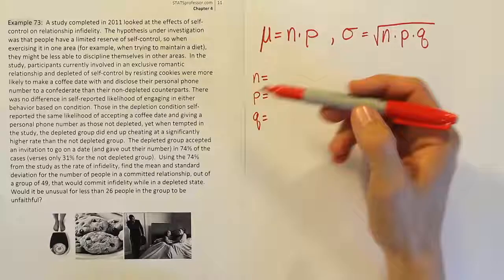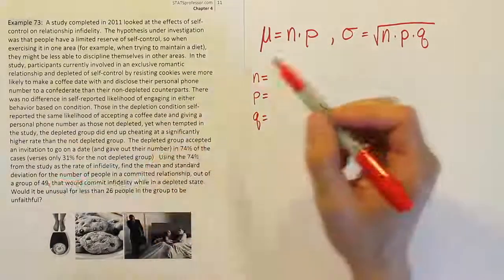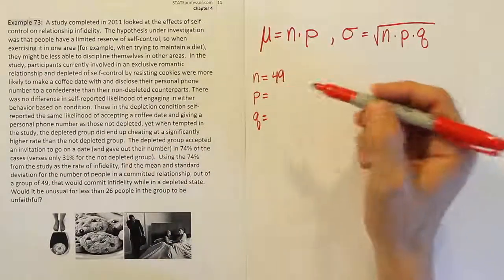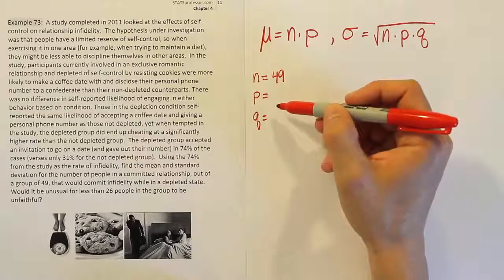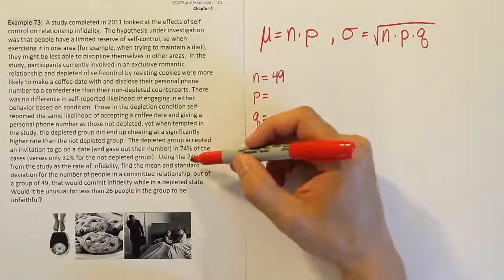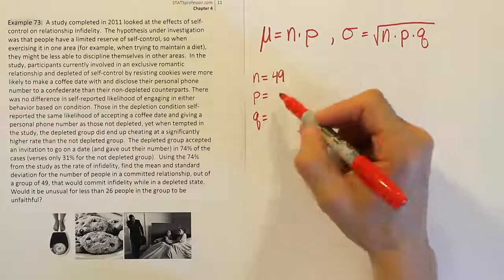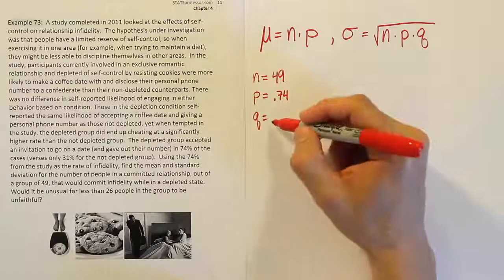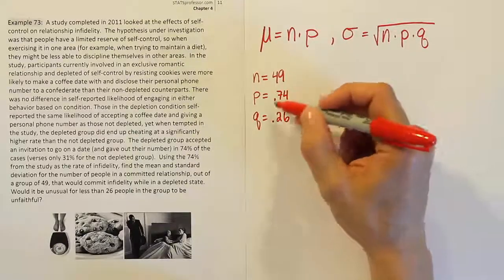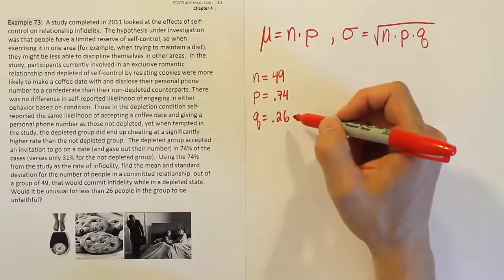All right, well, let's figure that out. There are 49 people we're going to be looking at. So that's your n. It's your number of trials, right? We'll look at 49 separate cases. The probability or likelihood that they're unfaithful, it says we should use the 74 percent from the study. So we're going to use 0.74. And then what's left over? Well, it would be 26 percent, right? So 74 percent cheated, 26 percent did not. Remember, these are complementary. It's 1 minus p to get q.